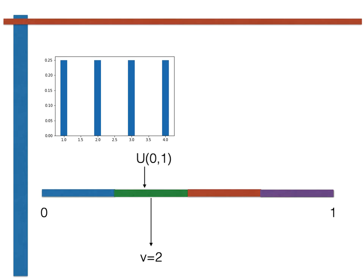If the uniform continuous random variable falls within the red section of the line, we return 3. And last but not least, if the uniform continuous random variable falls within the purple section of the line we return 4.